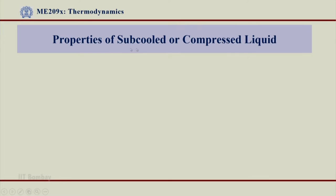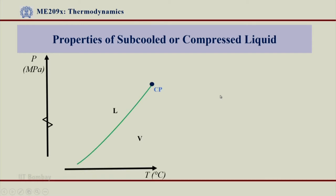Let us look at properties of subcooled or compressed liquid. This is a very special region for which we had referred to in table 3, and let us try to analyze how to retrieve properties of the subcooled or compressed liquid region. So this is our P-T diagram — pressure on the y-axis, temperature on the x-axis. What you see here is a LV line or saturated liquid vapor line drawn from TP to CP, that means triple point to critical point.